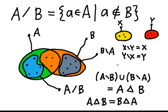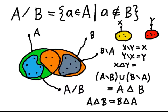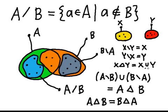What about the symmetric difference? According to the definition, we take the union of the two ordinary differences, and in this case we get X union Y. So the notion of symmetric difference becomes the notion of union in this particular case.